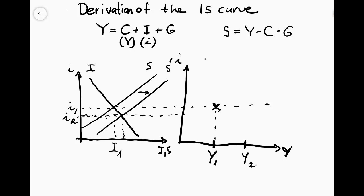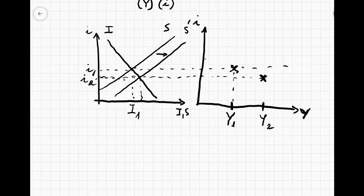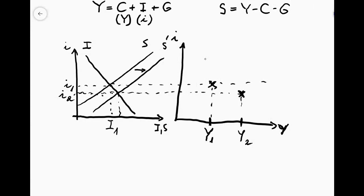So we know that if the GDP increases in the economy, then the goods market equilibrium requires a lower interest rate. So this already tells us that we have here a negative relationship. And this is the main lesson from this derivation, namely that the IS curve is negatively sloped.